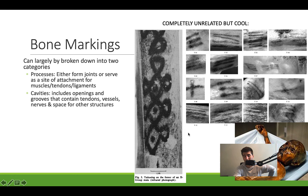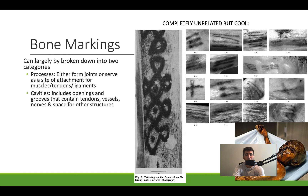When it comes to bone markings — or different types of formations on bones — there are processes, which form joints or serve as attachment sites for muscles, tendons, and ligaments. Then there are cavities, which are grooves that help control the point of rotation or movement of a joint. Processes are outcroppings; cavities are the opposite.